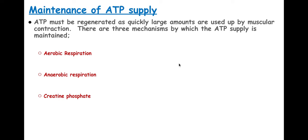There are three ways we can get ATP to supply our muscles with ATP for muscle contraction. Don't forget ATP is used in muscle contraction to actively transport the calcium back into the sarcoplasmic reticulum at the end, but it's also used to break that cross bridge.